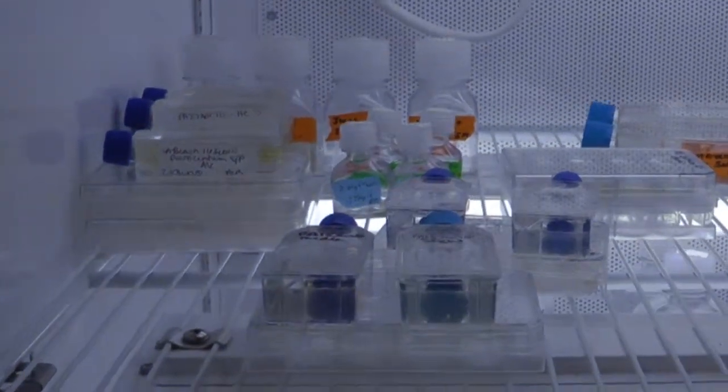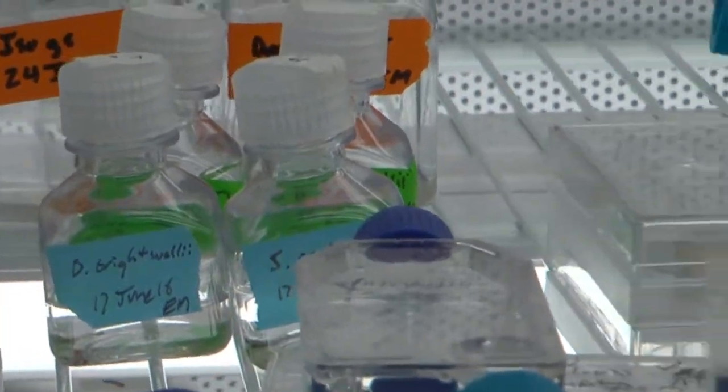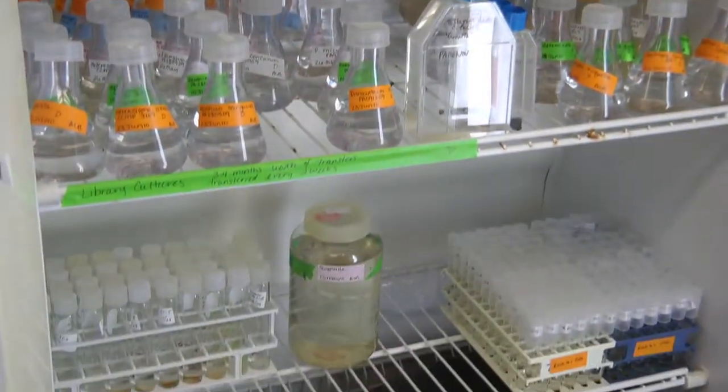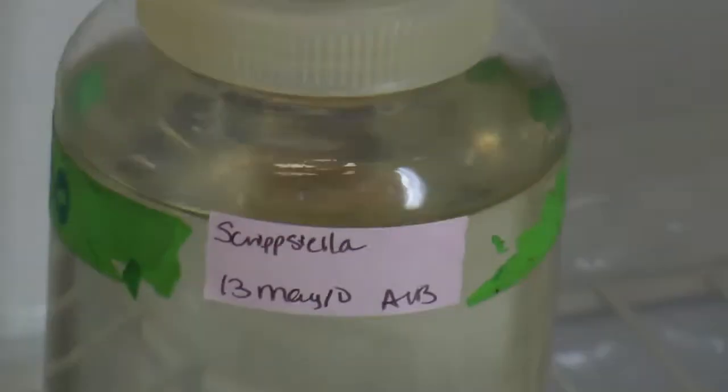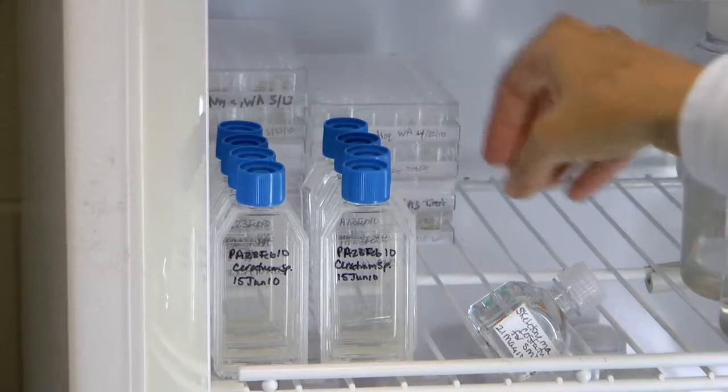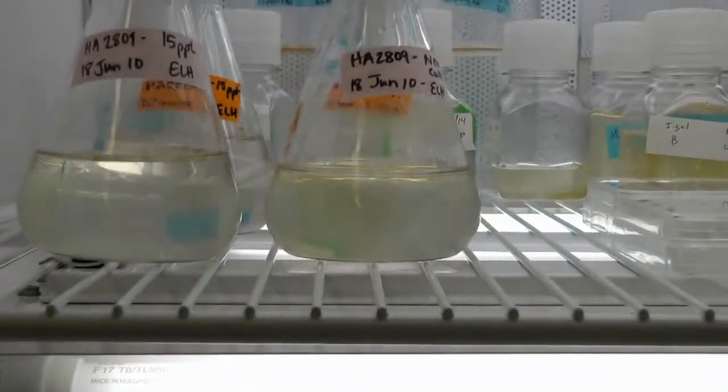When we bring these organisms into culture, we have to figure out a whole bunch of things. What are the conditions they like? What are the light levels? What are the temperature levels? What kind of food do they like? And most of the organisms do not do well on culture. So most of the plankton from the ocean are very difficult to maintain.